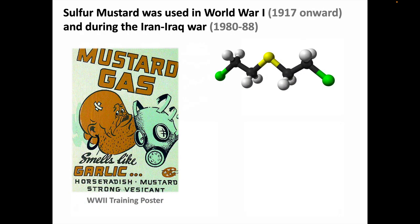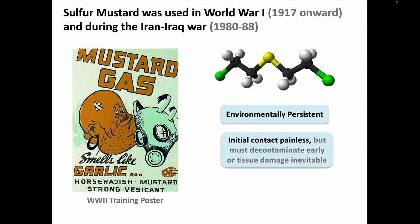Sulfur mustard was first used on the battlefield in World War I starting in 1917, and it had occasional uses after that, including the Iran-Iraq War in the 1980s. Much of our current medical understanding of sulfur mustard comes from that conflict. Sulfur mustard has a consistency like motor oil and is environmentally persistent. If you spread some around the battlefield, you can kill or more likely disable people who get exposed, and you are denying your enemy free movement through the area — which can have great tactical advantage. Initial contact with sulfur mustard is painless, but the chemical changes in the tissue start occurring quickly, and you have to decontaminate early even before symptoms occur or the damage will become inevitable. Sulfur mustard is an alkylating agent — a mechanism it shares with several cancer chemotherapy drugs — and it cross-links molecules including DNA, leading to cell death after a short latent period.